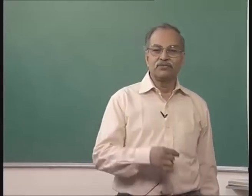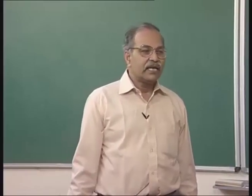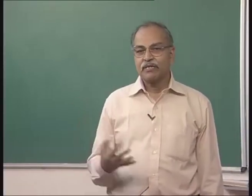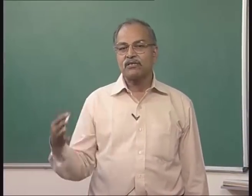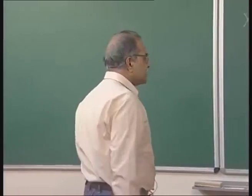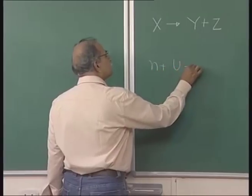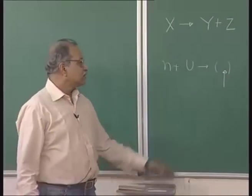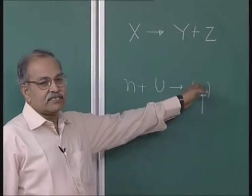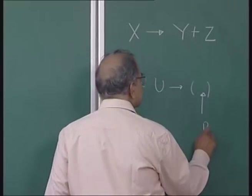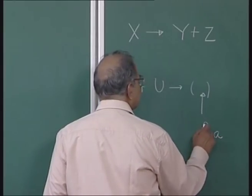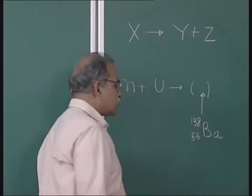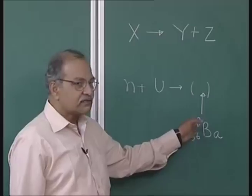Lots of neutron irradiation experiments were going on, and it was in 1939 that Hahn and Strassmann were doing this experiment, irradiating a natural uranium sample with neutrons. When they did that, the product obtained — they were chemists, so chemical analysis was very strong — when the irradiated product was analyzed, they found that there is barium in it. Barium has Z=56 and around A=138; there are several stable isotopes of barium, with 138 being the most abundant.